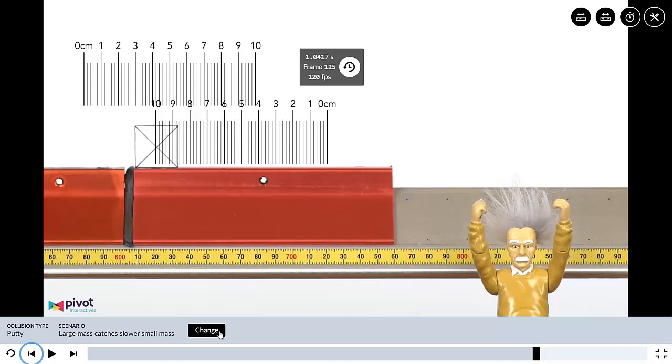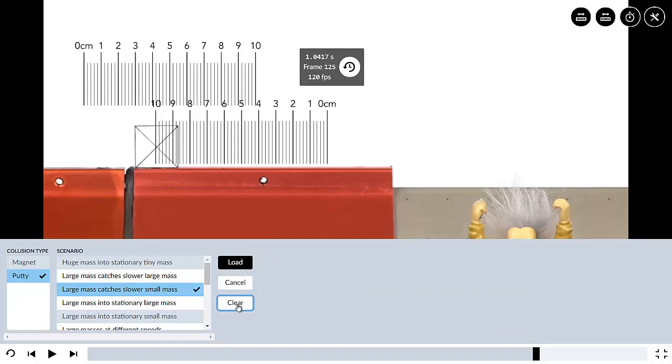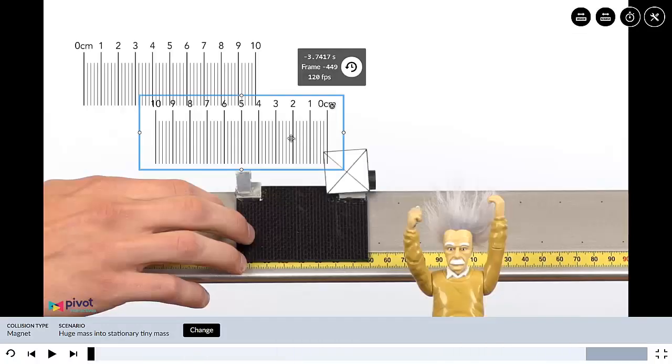With me there? This is going to be a challenge. You've got to get directions, you've got to get initial, and you've got to get final. Now if we go into a magnet one, I'm just going to pick the one at the top, huge mass and a stationary tiny mass. Here we go. There's the stationary tiny mass. If we run it, see how that's different? Because of the magnets they don't actually touch.